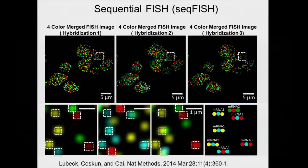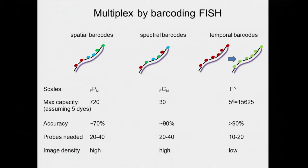This method — temporal barcoding — allows us to scale exponentially in barcoding capacity. With five different colors available, just six hybridizations is enough to cover almost the entire transcriptome. This is very different from doing five genes at a time: to cover the whole transcriptome that way would require thousands of hybridization rounds, whereas here six rounds are sufficient.